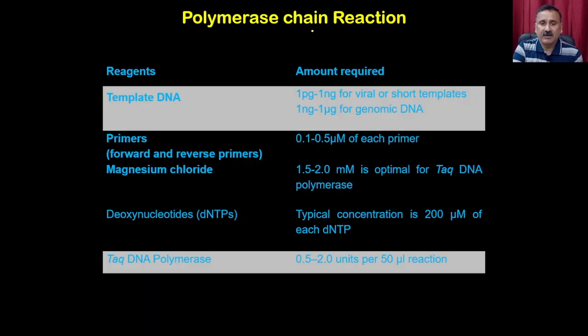In today's lecture, we are going to focus on the technical aspect of the polymerase chain reaction — how you can set up PCRs, how you can design primers, and so on. The requirements for PCR include the following reagents: template DNA, primers, magnesium chloride, dNTPs, Taq DNA polymerase, water to bring the reaction to 50 microliters, and a polymerase buffer.